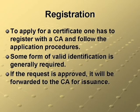Step 1 is to apply for the certificate. To do this, you generally register with the CA and follow the application procedures. Some form of valid identification is generally required. Remember, the amount of identification needed is going to depend upon the class of certificate that you are applying for.